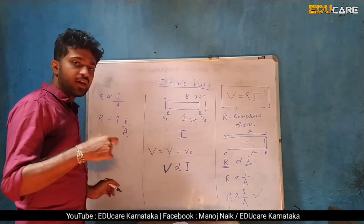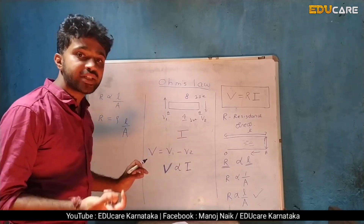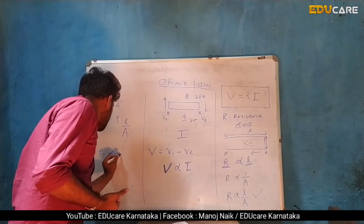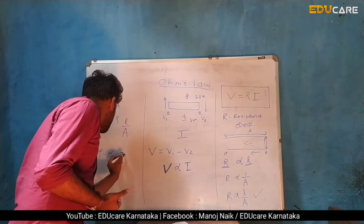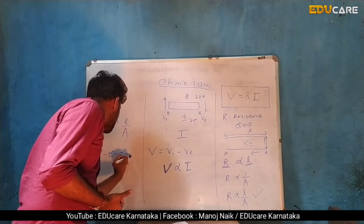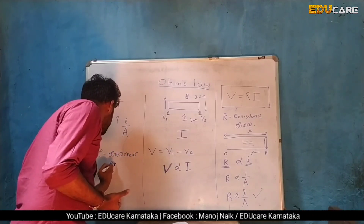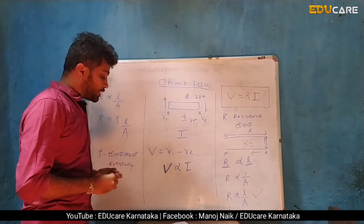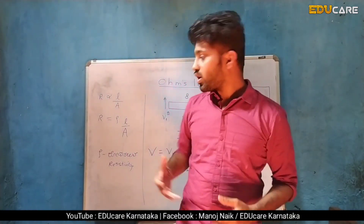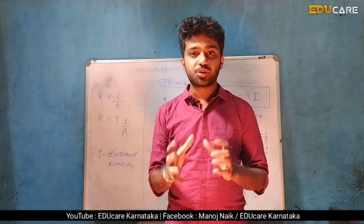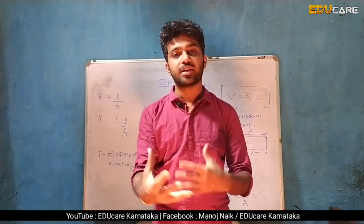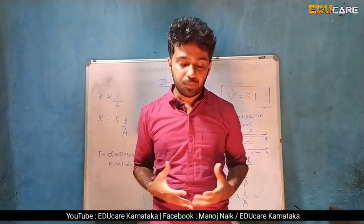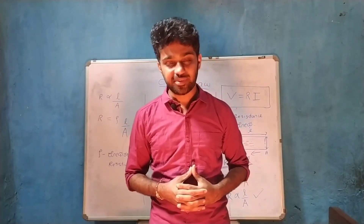Resistivity is that constant rho in the equation R equals rho L over A. This video has covered Ohm's Law, resistance, and resistivity. If you have any doubts, please comment below and I will give you feedback. Thank you. Bye.